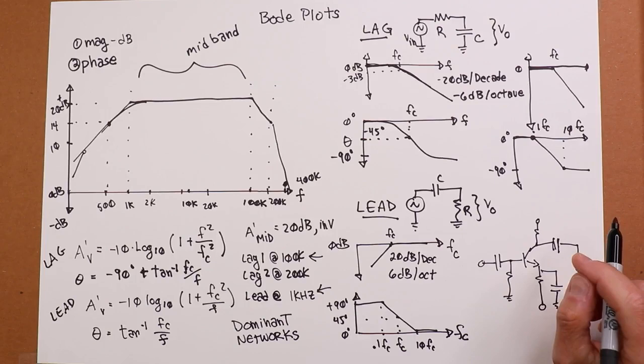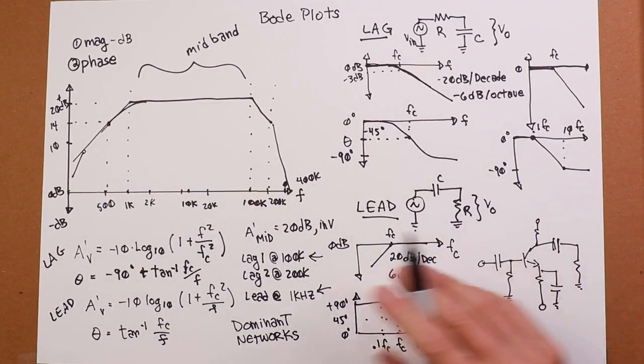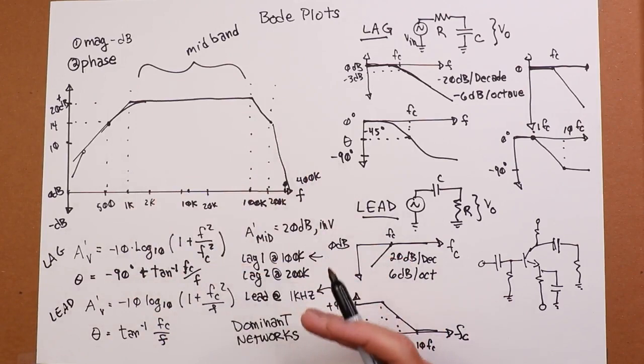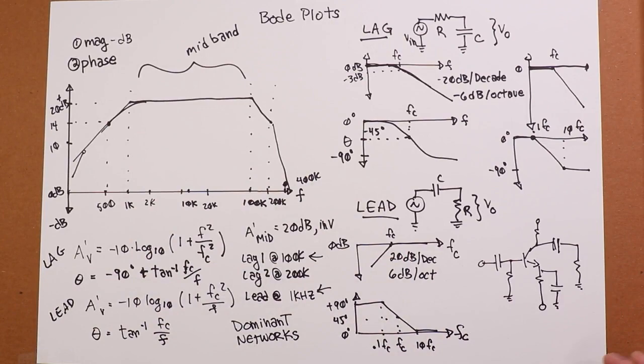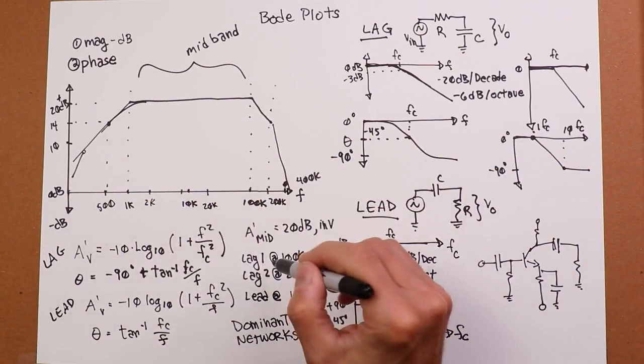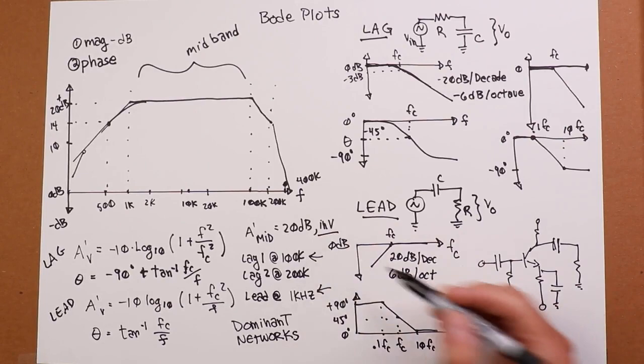This turns out to be very important when we start looking at negative feedback, because if we're not careful about the gain and the phase, all kinds of ugly things can happen with our op-amps. So this is the gain part of it. We would do the same kind of thing with the phase. In other words, you identify the individual networks. We just say the mid-band phase is, in this case, 180 degrees, negative 180 degrees, because it's inverted.